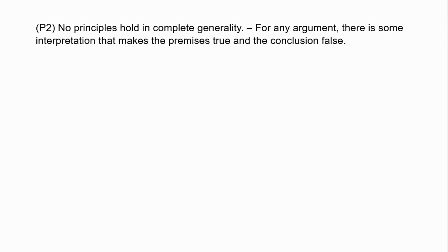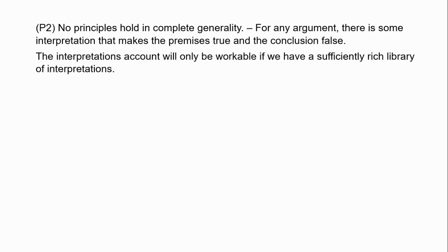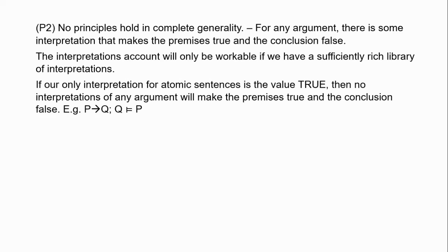Let's turn to the second premise: there are no principles that hold in complete generality. Since Russell assumes the interpretational account, we can read this as: for any argument, there is some interpretation of the non-logical expressions that makes the premises true and the conclusion false, providing a counterexample to the proposed logical law. The interpretational account will only be workable if we have a sufficiently rich library of interpretations. For example, if the only interpretation available for atomic sentences is the value true, there will be no interpretations making premises true and conclusion false, so every argument would appear valid — even obviously invalid ones like affirming the consequent.